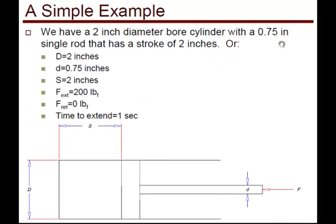For a simple example, we have a bore of 2 inches, rod diameter of 3/4 of an inch or 0.75, stroke of 2 inches, operating against a force of 200 pounds, no force on the retract, and the time to extend assumed to be 1 second.